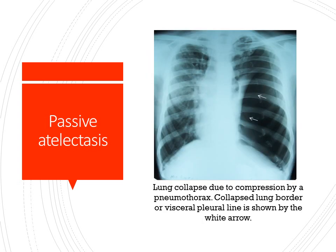This is the picture of a passive collapse or relaxation collapse where you can see a pneumothorax on the left side with a collapsed lung. The collapsed lung border is seen here, otherwise called the visceral pleural line. Pneumothorax compresses the lung, collapsing it towards the hilum.